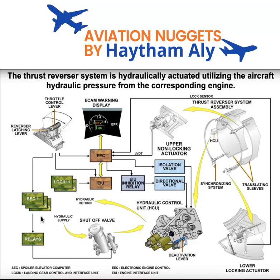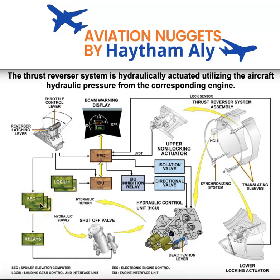Each computer must confirm a certain condition. For example, the EIU must confirm from the LGCIU that the aircraft is on ground with the landing gear compressed. The SEC must confirm from the radio altimeter, through the landing gear control interface unit, that the aircraft altitude is less than 10 feet. The EEC must confirm that the other engine is at idle.